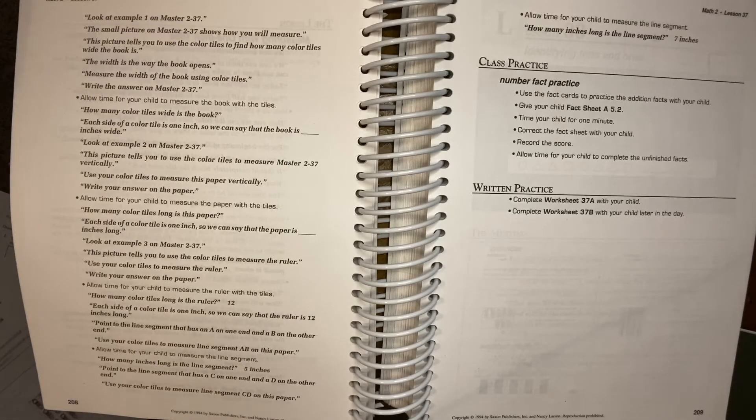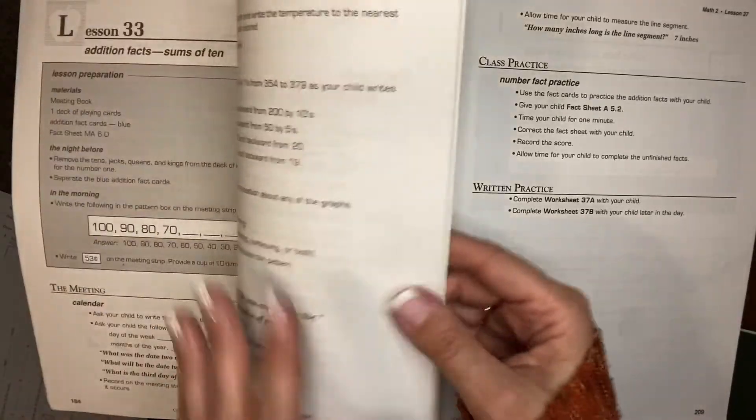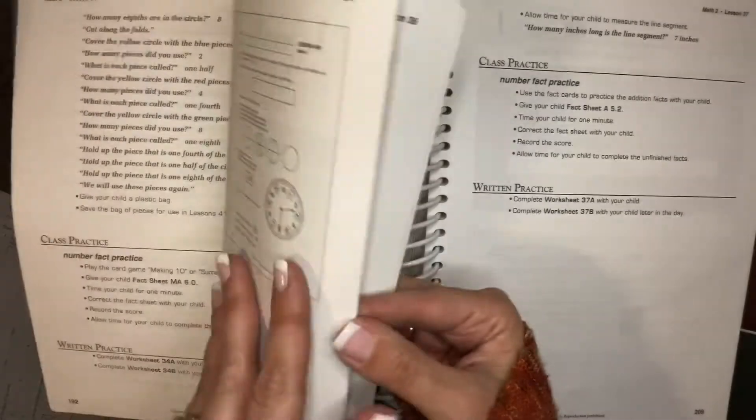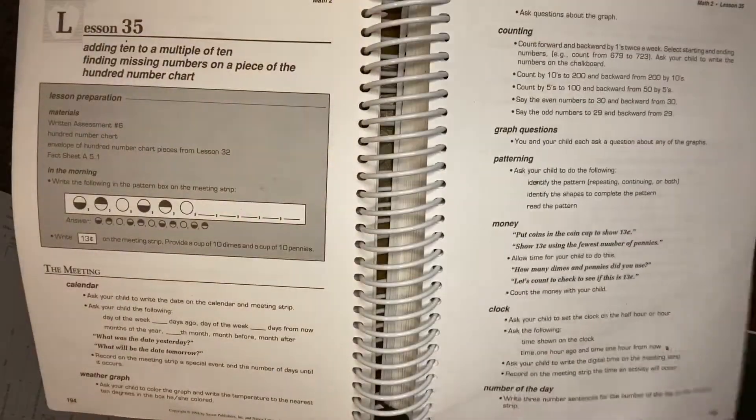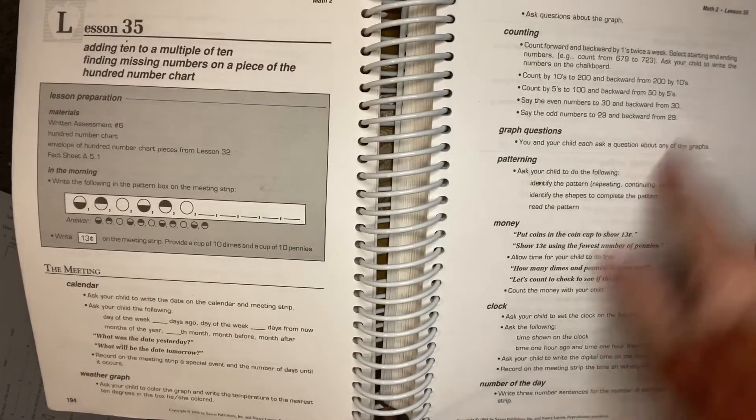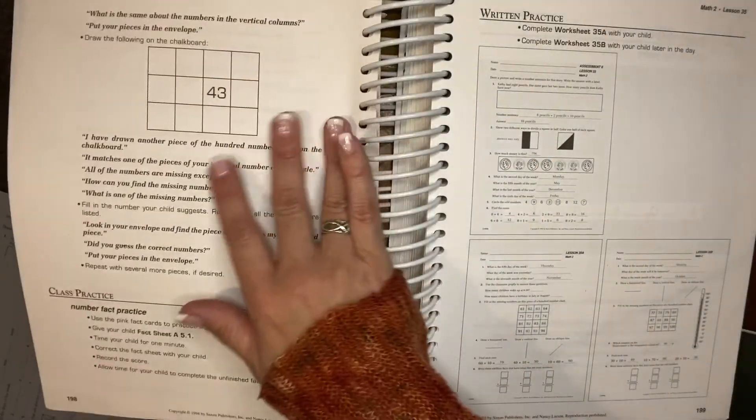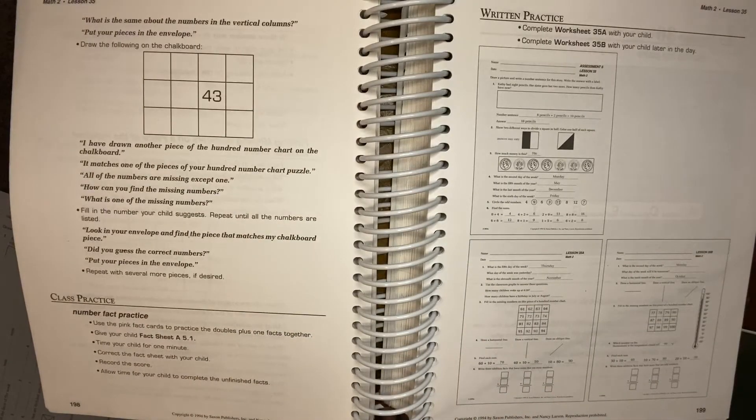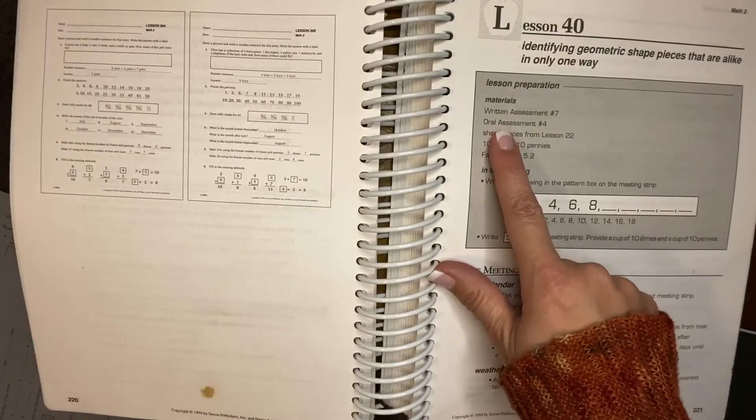So then every five lessons, there is a test. Let me go back and show you in lesson 35. So on every lesson that ends with a five, you will have a written assessment. And so that just kind of looks like a worksheet, but it's working on concepts that you've learned up until that point. But then every 10th lesson, so our next one would be on lesson 40, you have a written assessment and an oral assessment.